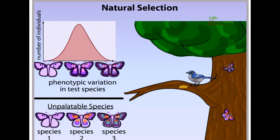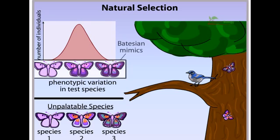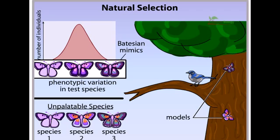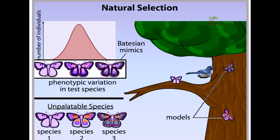The butterflies in our test population are considered Batesian mimics because these edible individuals are similar to — that is, they mimic — the appearance of unpalatable species, the models in the environment. The mimics gain protection from predation. Birds that learn to avoid the models also avoid the mimics of similar appearance.